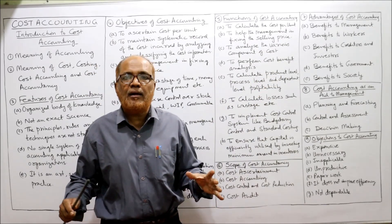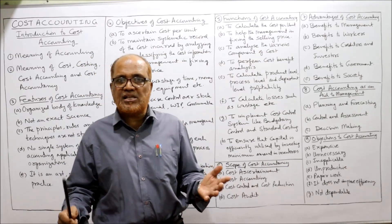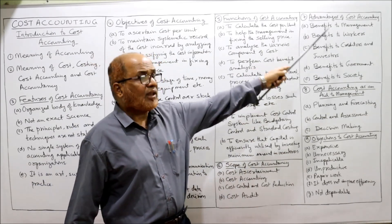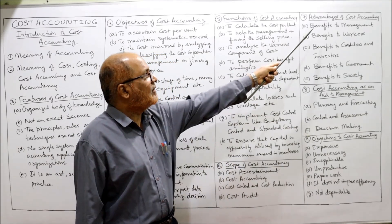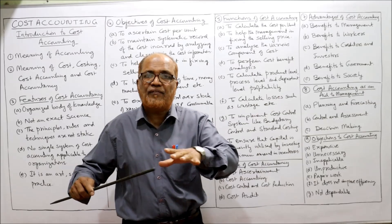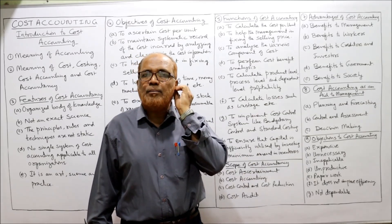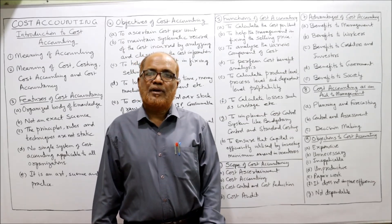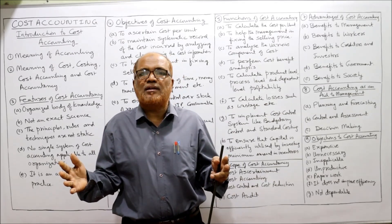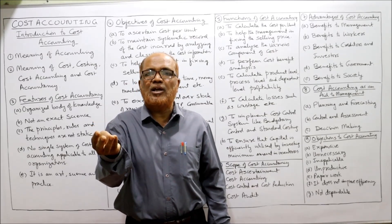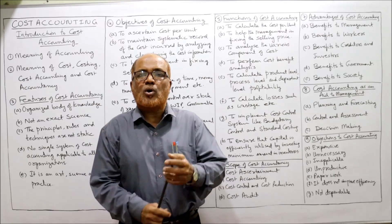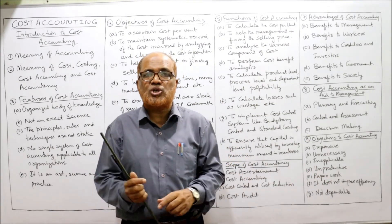The next topic is advantages of cost accounting. There are many advantages, which is why it has become a specialized body of knowledge. Benefits to management: management can find out the cost per unit, take decisions based on cost accounting — such as fixing selling price, make-or-buy decisions, and continue-or-shut-down decisions. Many problems confronted by management are addressed through cost accounting.